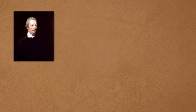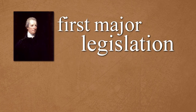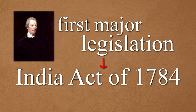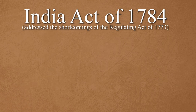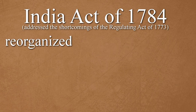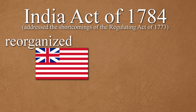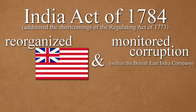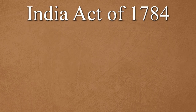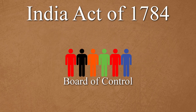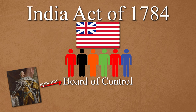As Prime Minister, Pitt's first major piece of legislation was his India Act of 1784, which reorganized the British East India Company and monitored corruption. This act also created a board of control, appointed by the king to oversee the East India Company.